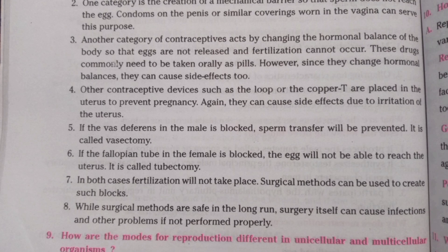Other contraceptive devices such as the loop and the copper-T are placed in the uterus to prevent pregnancy. Again, they can cause side effects due to irritation of the uterus.